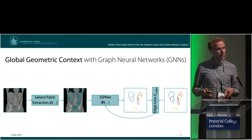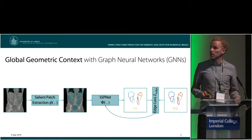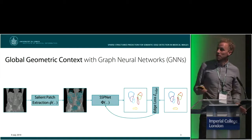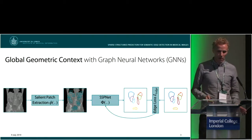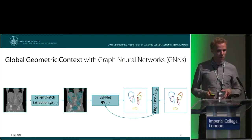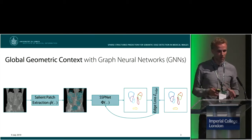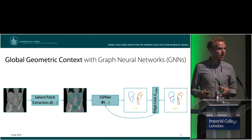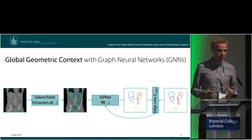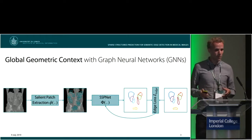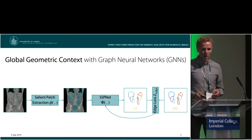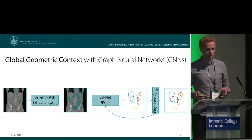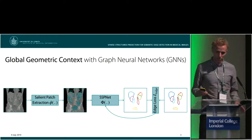We consider the problem of semantic edge detection in 2D medical images. The first thing we do is extract image patches from the input image at salient key points, which can be computed by simple interest operators or a salient CNN.